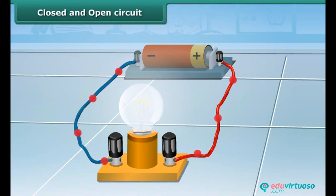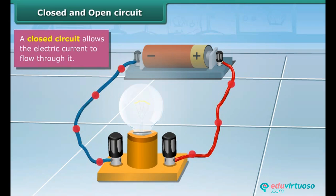Closed and open circuit: If you see both the wires are connected to both the terminals, it is an unbroken path, it is a closed circuit.